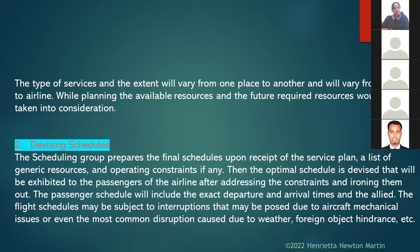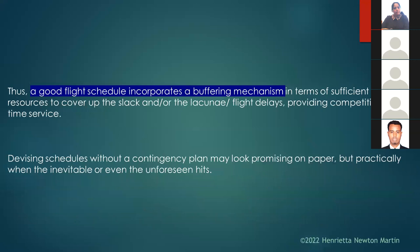Sometimes when a foreign object is detected or there are aircraft mechanical issues, or due to weather — heavy rain in India during the monsoon period, or heavy snow in a country like Switzerland — flights can be delayed. These are common disruptions caused due to weather or mechanical reasons.